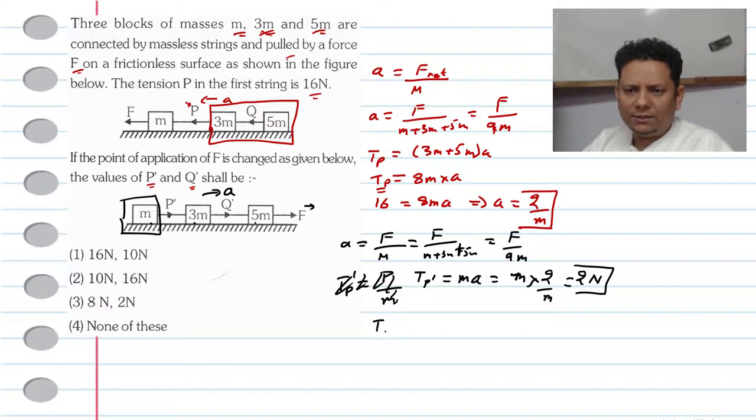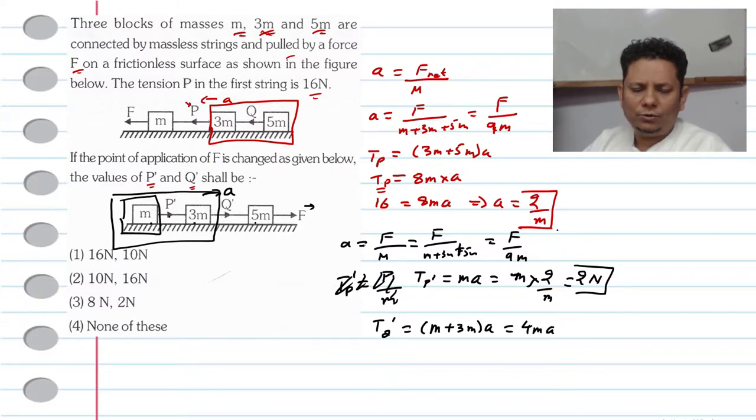Now let's talk about the tension Q'. The value of Q' will be these two masses (M plus 3M) multiplied by A. So 4M multiplied by 2 by M, which means the tension at Q' is 8N.